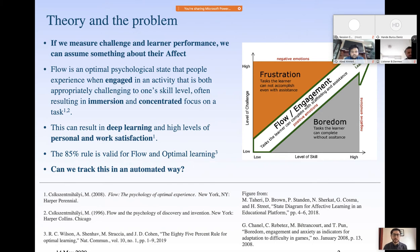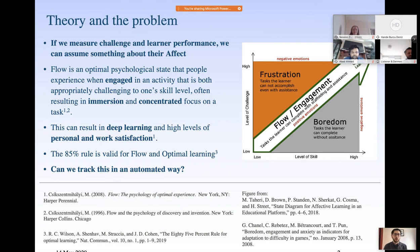Frustration is when the person has a challenge that is higher than their existing skill level — so high that no amount of assistance can get them to that new level of achievement. Boredom is when somebody is confronted with a task so simple that their skill level far exceeds the challenge at hand. In between there's a fine line where the challenge can be achieved with a little assistance from a peer or tutor, or through self-teaching. That's where learning happens.